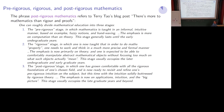That phrase comes from a famous blog post by Terry Tao. He writes that one can roughly divide mathematical education into three stages. The pre-rigorous stage, in which mathematics is taught in an informal, intuitive manner based on examples and fuzzy notions of hand-waving — the emphasis is more on computation than theory. This stage generally lasts into the early undergraduate years.